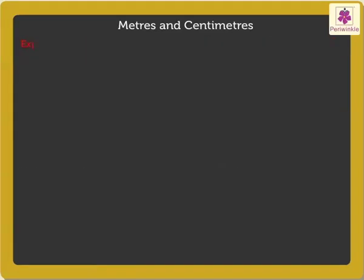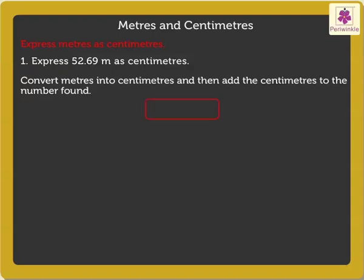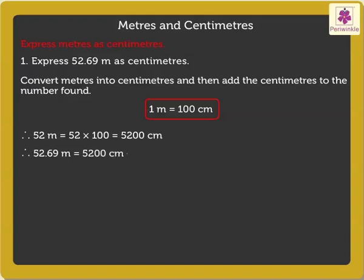Now let's see how to express meters as centimeters. Express 52.69 meters as centimeters. Firstly, convert meters into centimeters and then add the centimeters to the number found. We know that 1 meter is equal to 100 centimeters. Therefore, 52 meters is equal to 52 into 100, which is 5200 centimeters. Now, add 5200 centimeters and 69 centimeters, which is equal to 5269 centimeters.